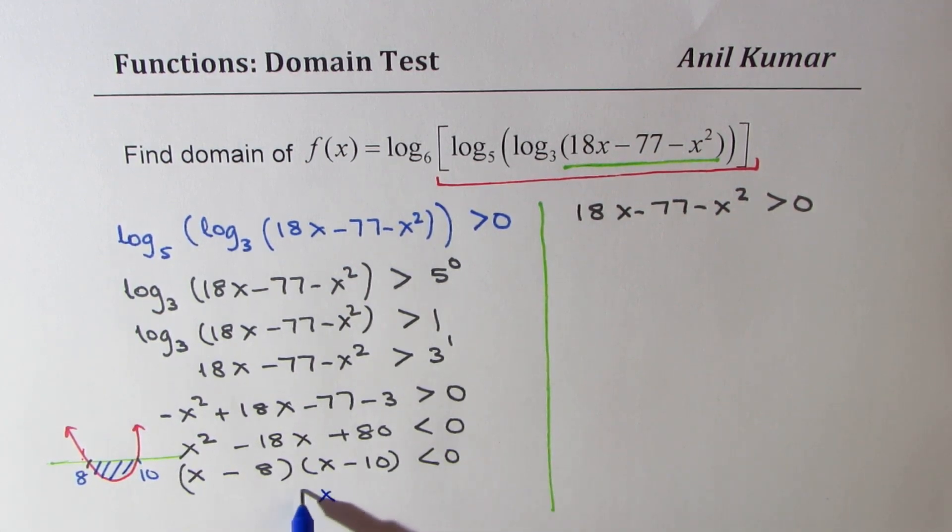So that means x should be greater than 8 and less than 10. So that is the condition which we get from one of our equations. Perfect.